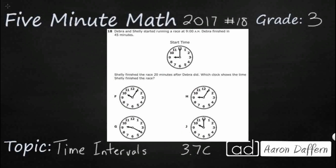So, this looks like a pretty simple problem, but it's actually pretty difficult because we've got two different steps that we need to think about here. Let's take a look. Deborah and Shelly started running a race at 9am, so that's what this time is right here. Start time, they've labeled it for us, but we know it's 9am because we've got the hour hand at the 9, and then the minute hand is up at the 12, which is the o'clock. That's the top of the hour.